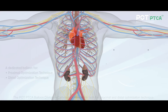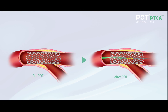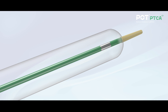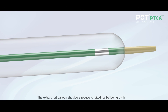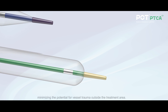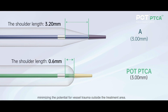The POT PTCA balloon dilatation catheter is indicated for both the proximal and distal optimization technique. The proximal segment of the stent can be evenly expanded to improve stent strut apposition. The extra short balloon shoulders reduce longitudinal balloon growth, minimizing the potential for vessel trauma outside the treatment area.